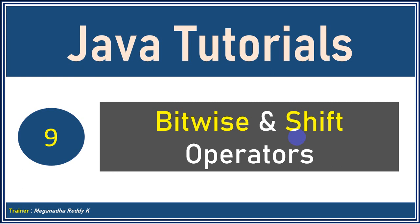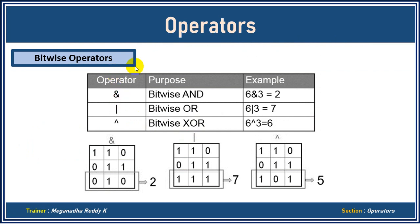In the description section of this YouTube video I'll be putting some links from where you can learn number systems, memory units, and bitwise and shift operators in detail. So in case you want to explore more, you can go through those links. Now we'll see a very high-level overview of bitwise and shift operators. Let's get started. We have three bitwise operators: bitwise AND, bitwise OR, and bitwise XOR, where XOR stands for exclusive OR.